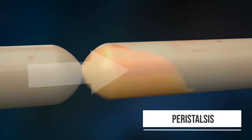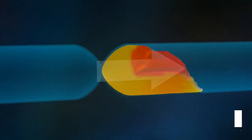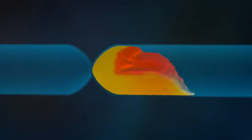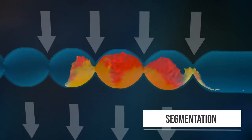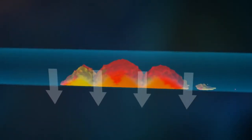As with the esophagus, the food is transported by peristalsis. In contrast, segmentation contractions serve to mix the chyme, which is shown here in yellow and red to make it easier to see the mixing process.